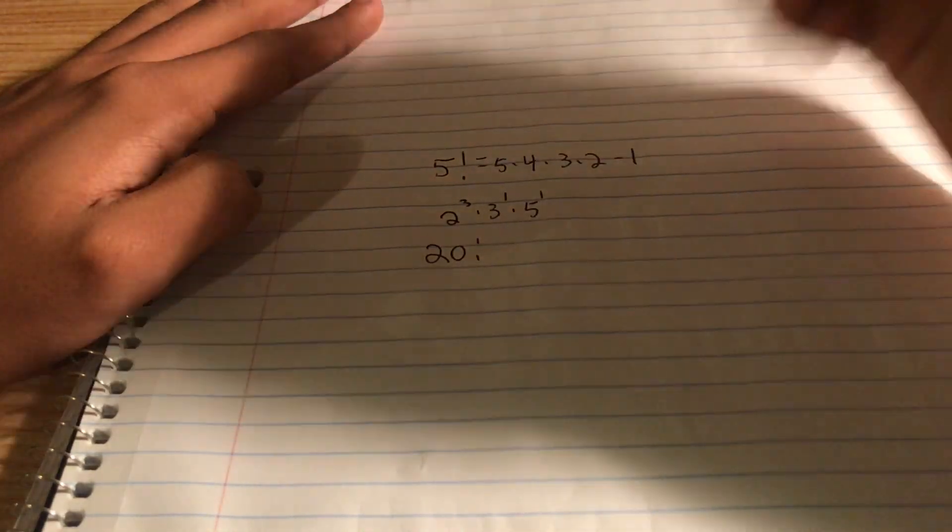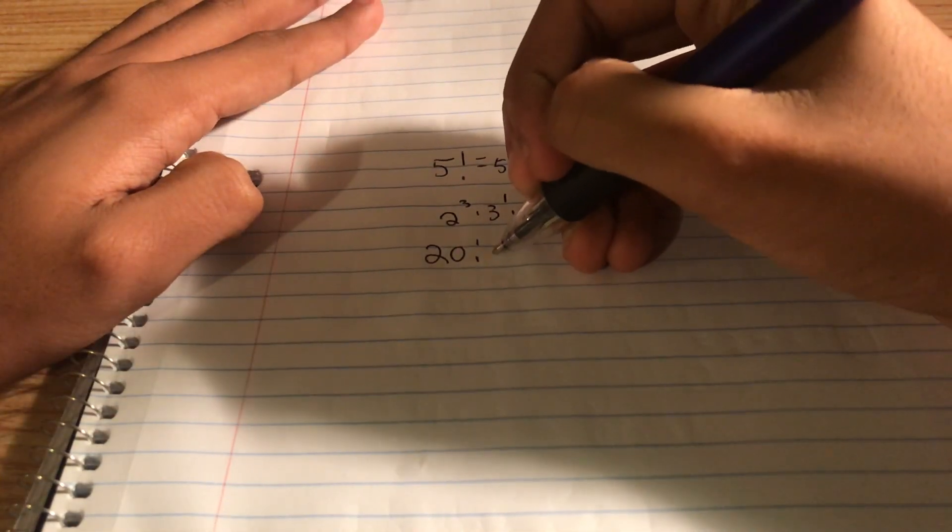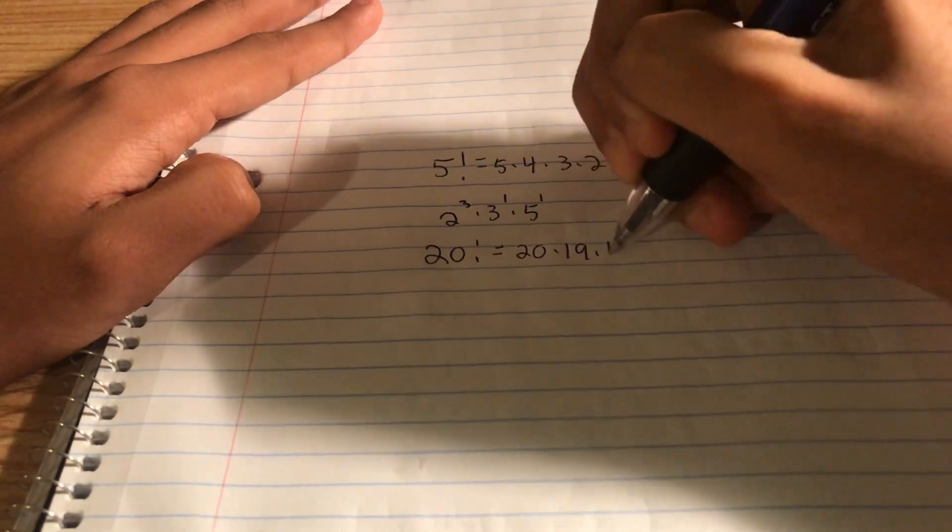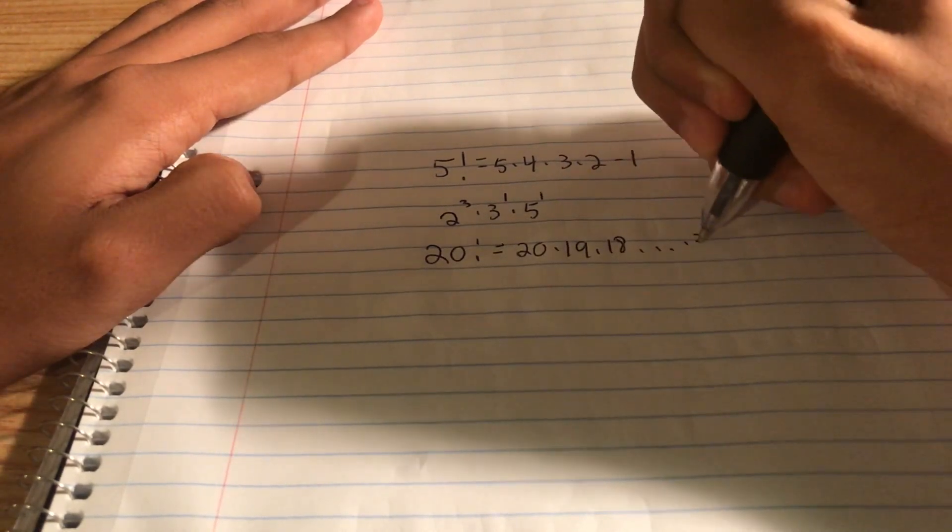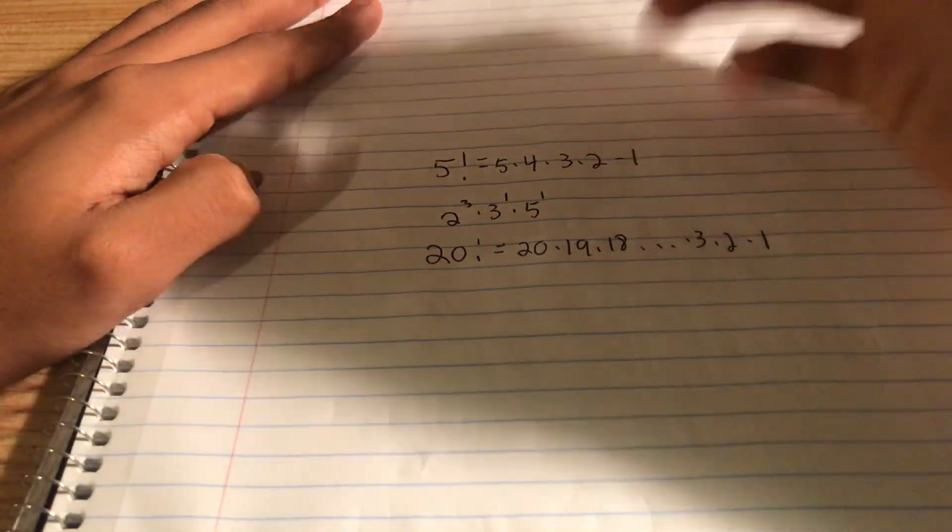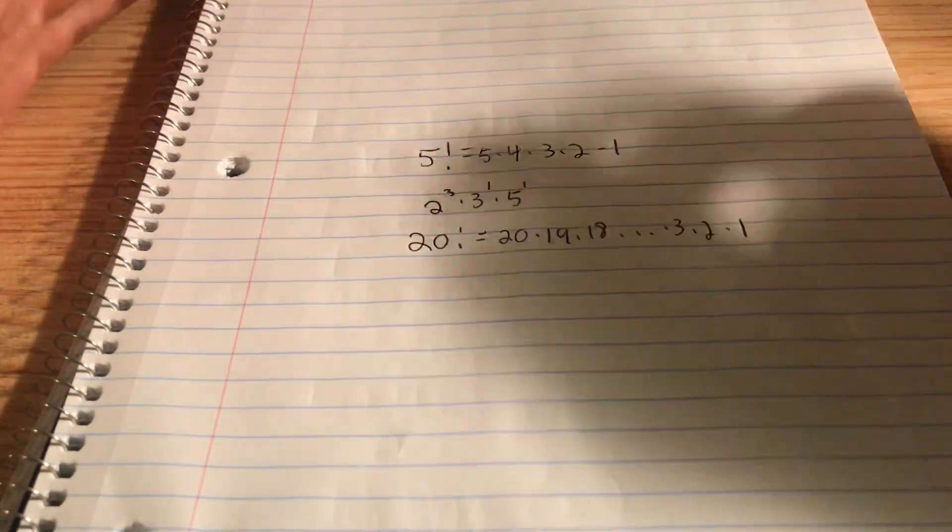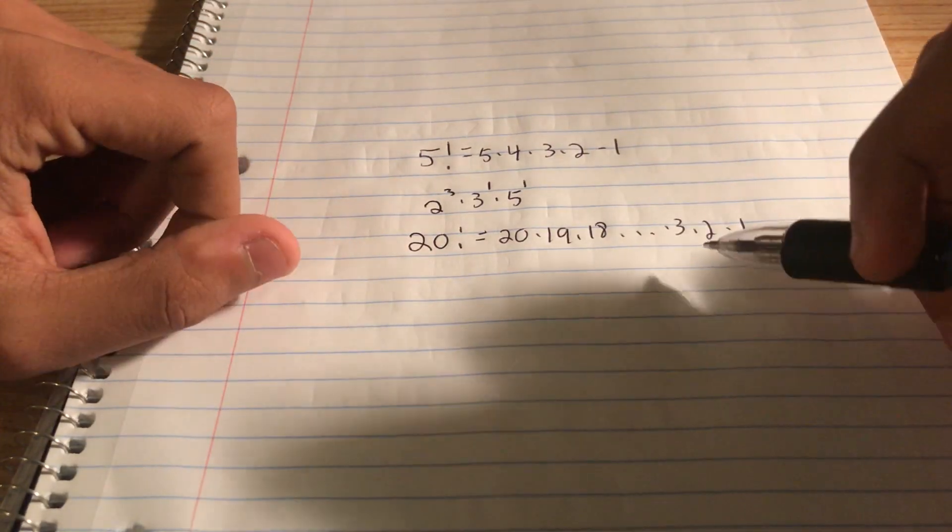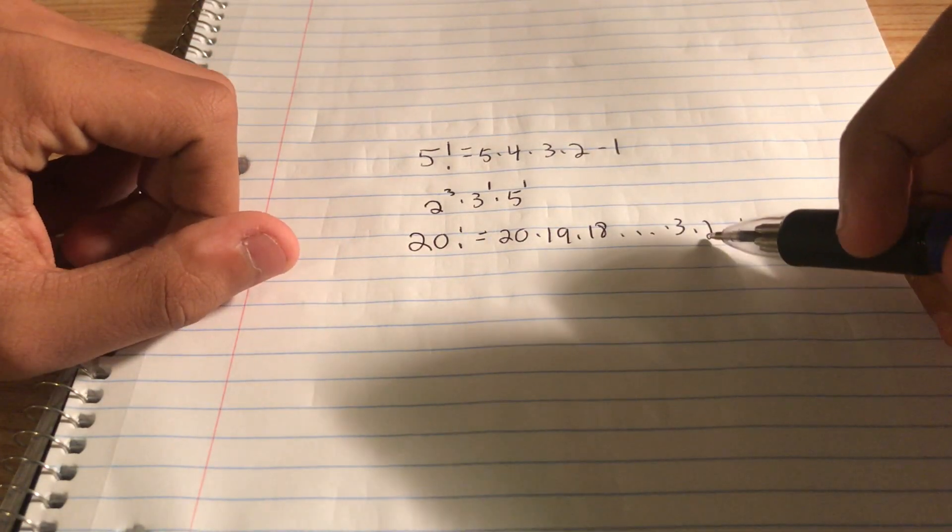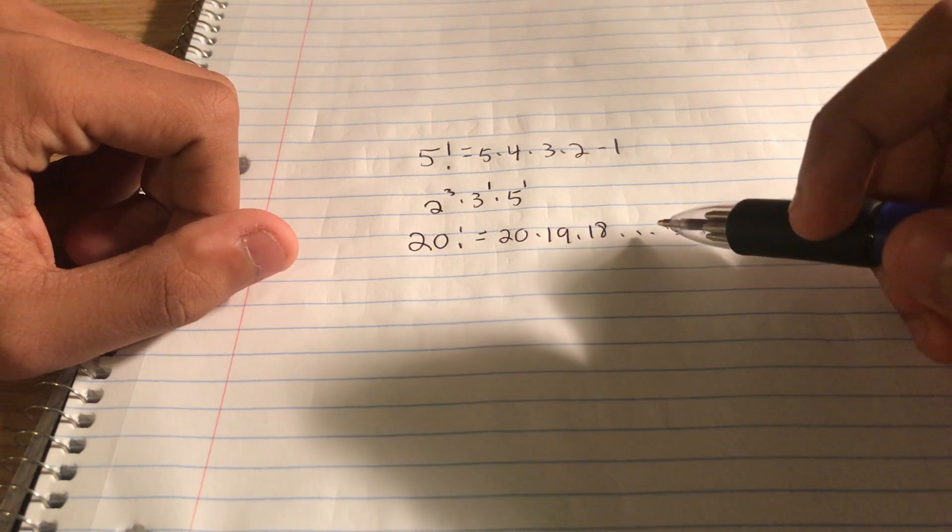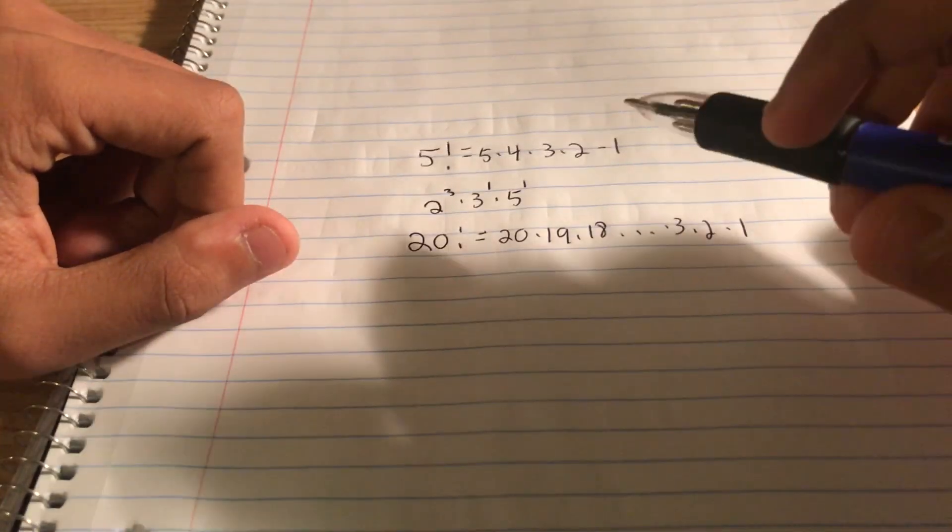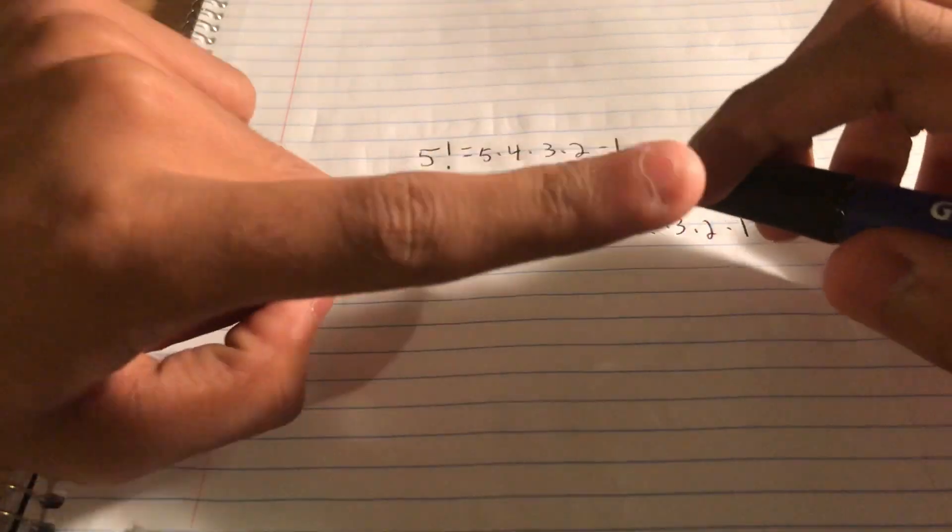20 factorial. Obviously, that's 20 times 19 times 18 times 3 times 2 times 1, and the stuff in between. Let's just do what we did for 5 factorial. Start with the powers of 2. We can start with 2. There's a 2 here, but then there will be a 4, then a 6, 8, 10, 12, 16, 18, 20. Each of those will have at least 1 power of 2.